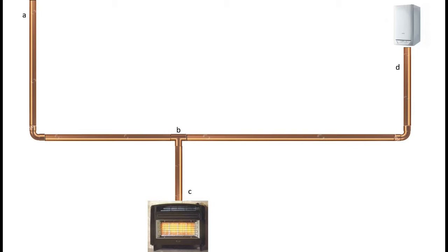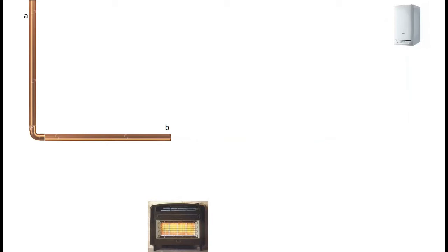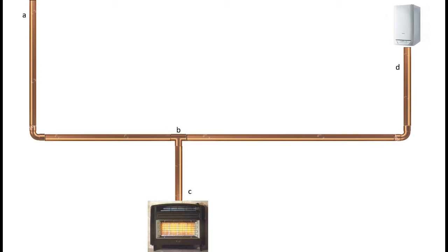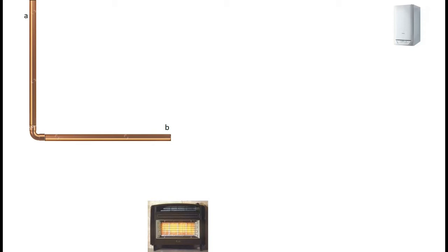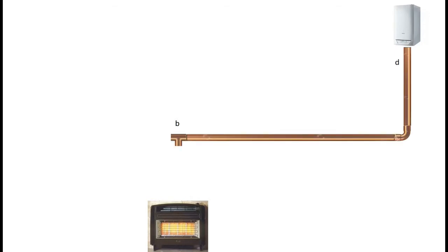What you need to do is you need to pipe size individually each of these little sections. In this lesson, this first one, I'm going to show you how to pipe size between A and B. We've just chosen that section to pipe size, A to B. In the next lecture, I'm going to show you how to pipe size B to C and from B to D.